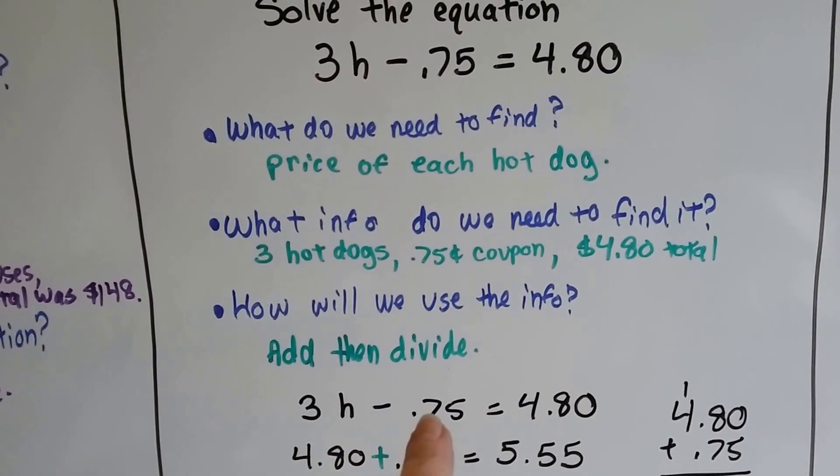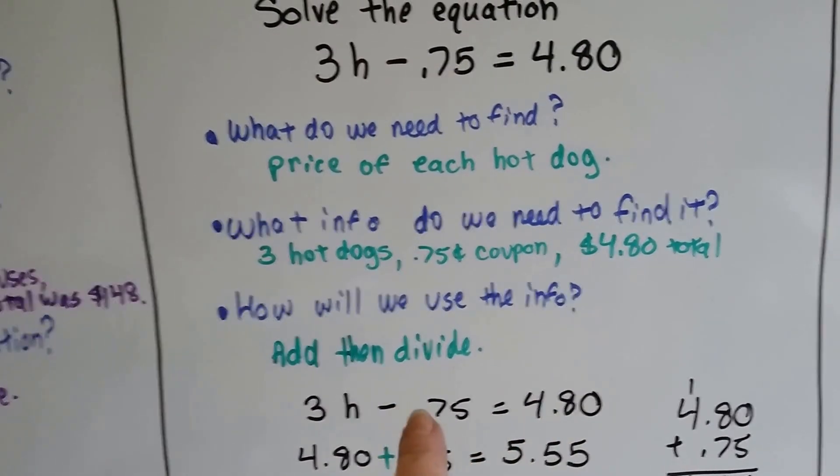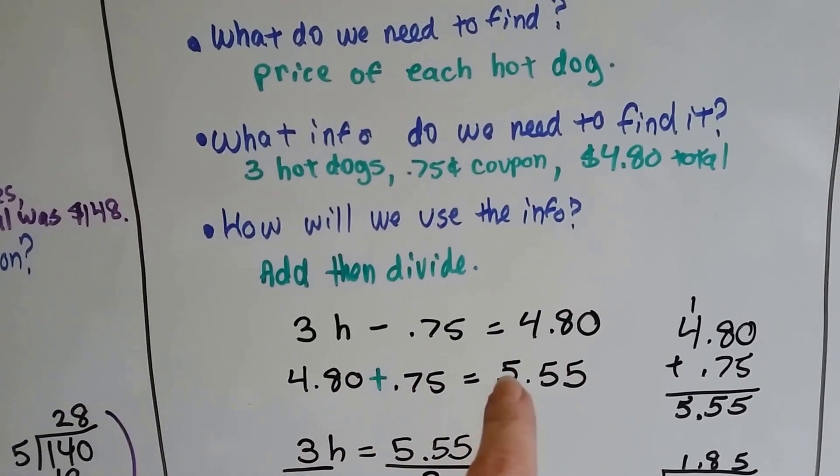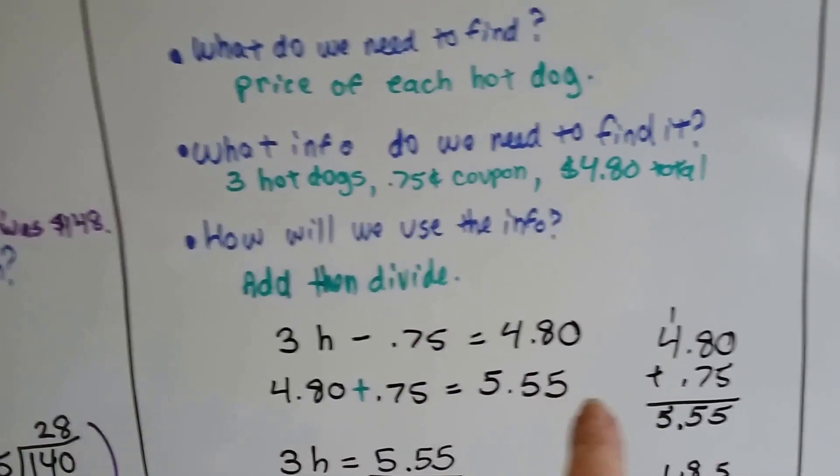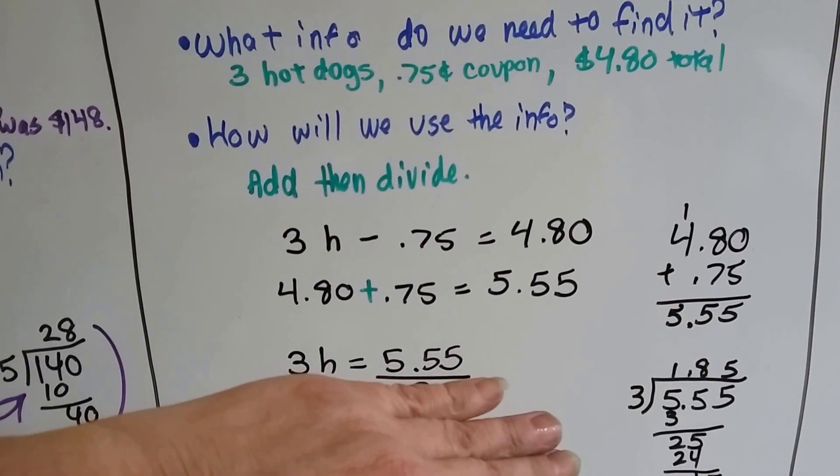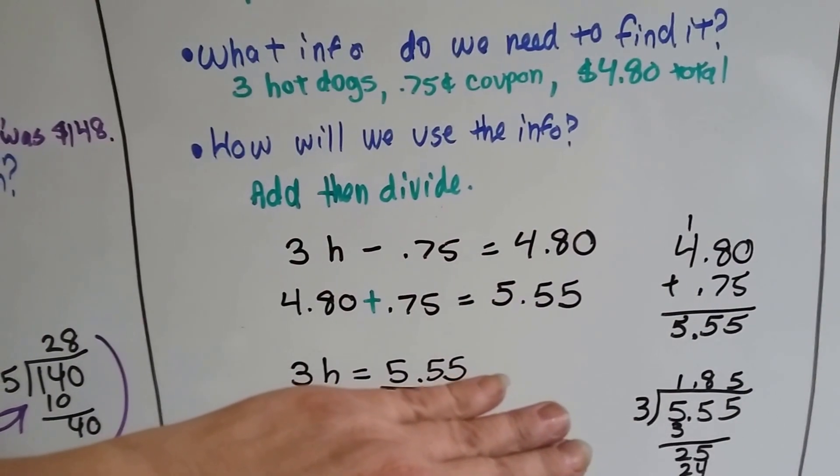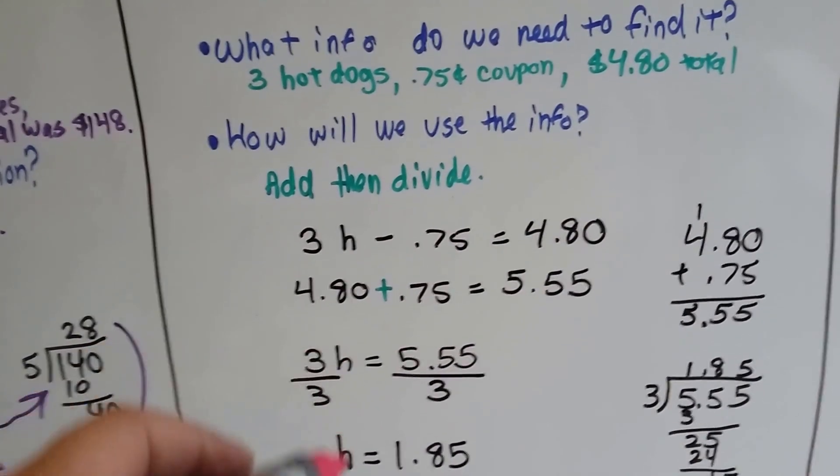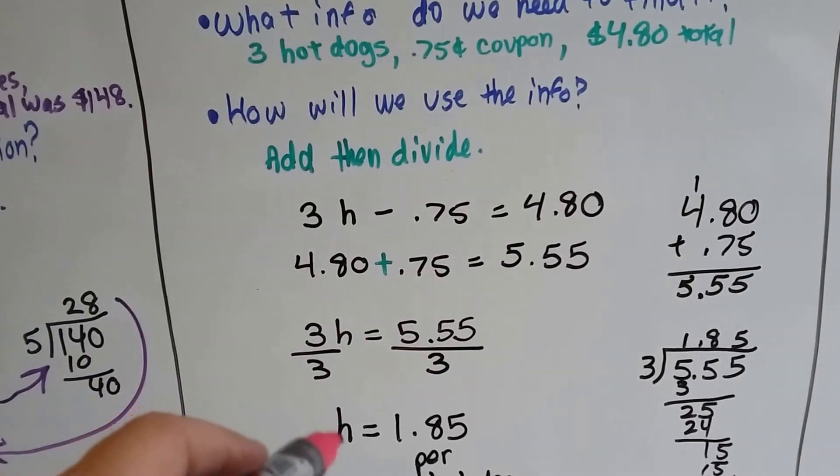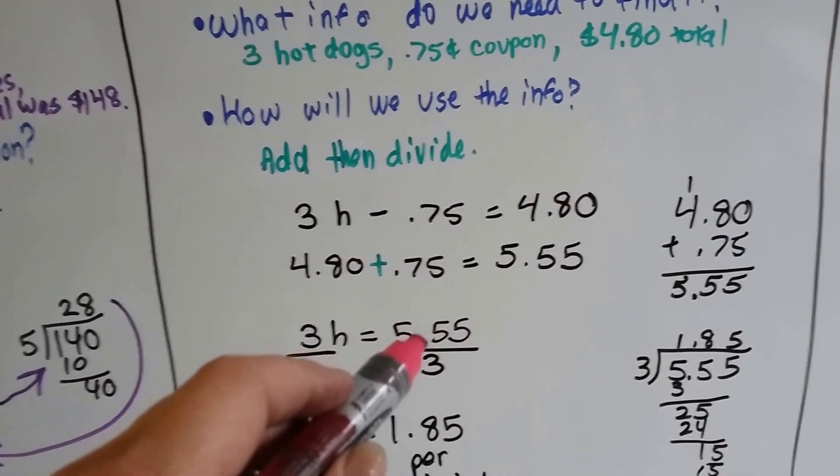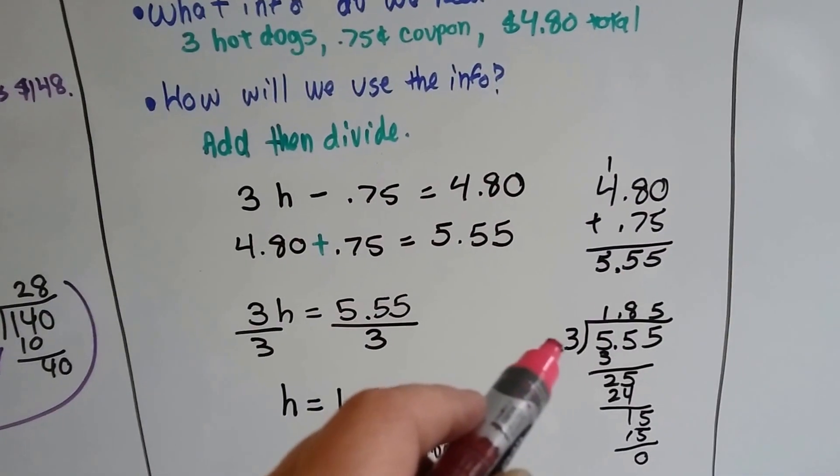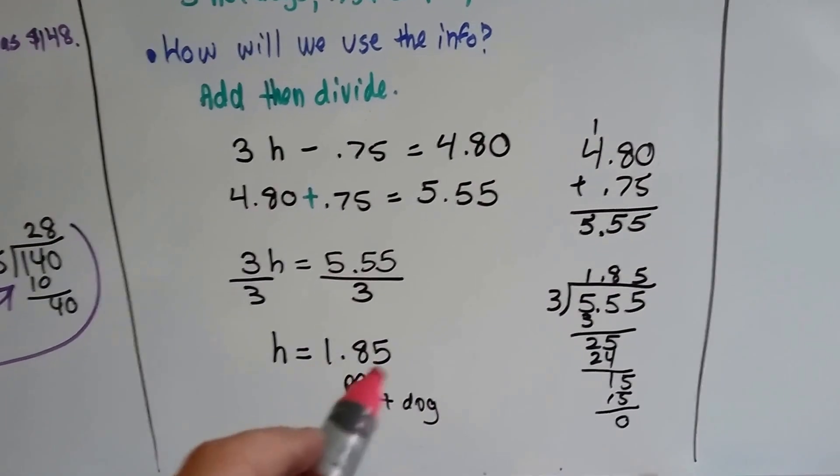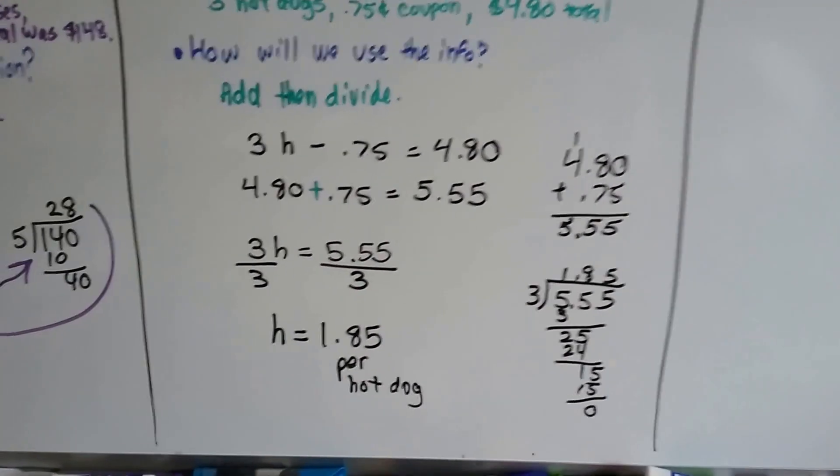We've got 3H minus $0.75. So we're going to add the $0.75 back onto the $4.80 to get rid of it. $4.80 plus $0.75 is $5.55. Now our equation says 3H equals $5.55. We're going to divide each side by 3 to isolate the H, the variable, so it's by itself. 3 divided by 3 is 1, so we have 1H. And $5.55 divided by 3, doing long division on the side, comes out to $1.85. So we know he paid $1.85 for each hot dog. That wasn't that hard, was it?